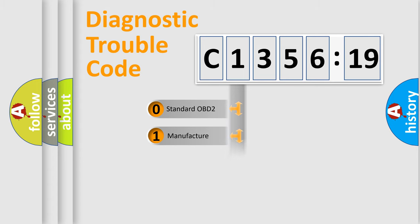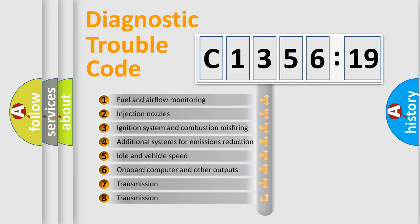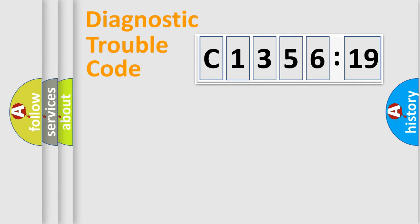If the second character is expressed as zero, it is a standardized error. In the case of numbers 1, 2, or 3, it is a more prestigious expression of the car-specific error. The third character specifies a subset of errors. The distribution shown is valid only for the standardized DTC code.